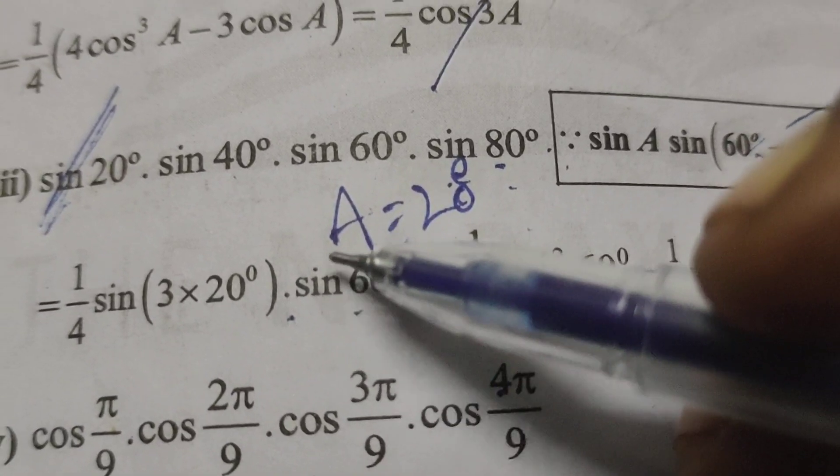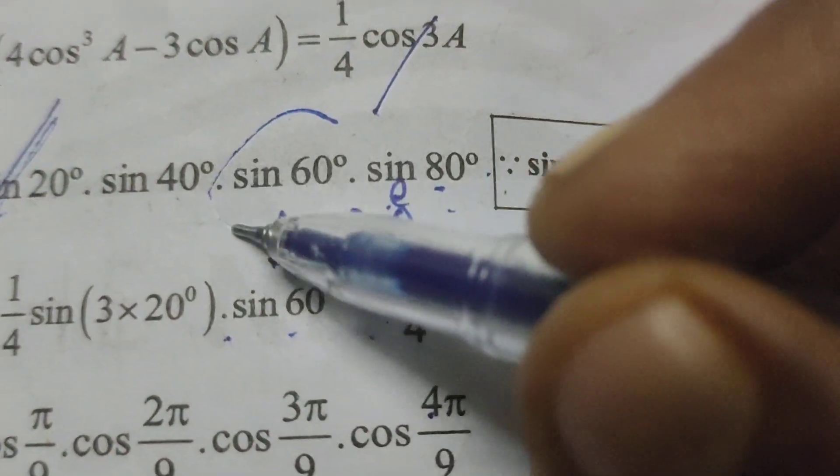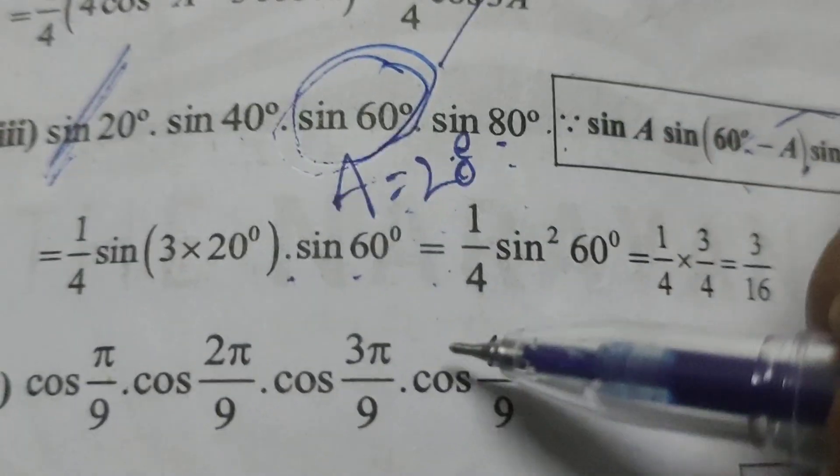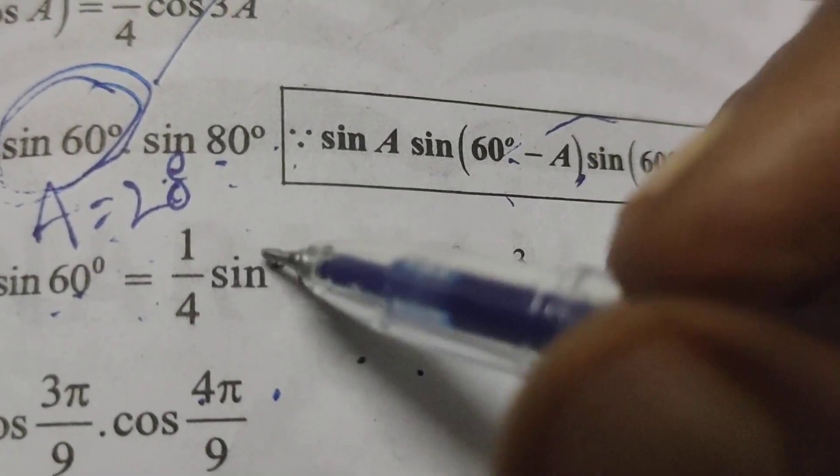Since sin 60 degrees appears twice here, we write this as 1/4 sin² 60 degrees, which is 1/4.